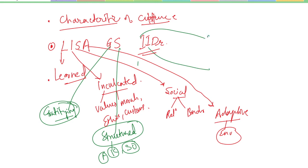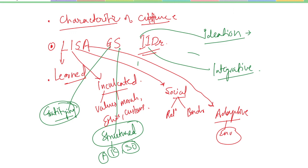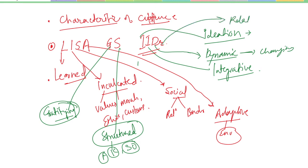The first I stands for Ideation — culture represents ideal things and cannot be completely practiced. The second I stands for Integrative — it integrates everyone, everything, and all religions. D stands for Dynamic — culture is always changing. Finally, R stands for Relative — culture is always different across different societies.